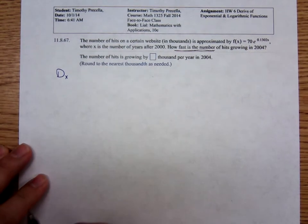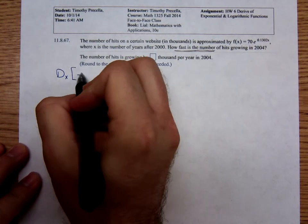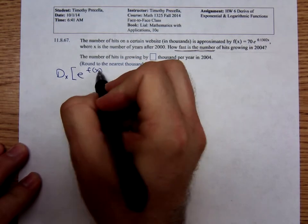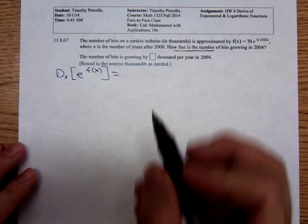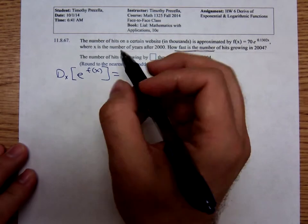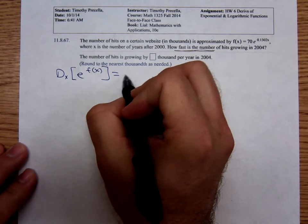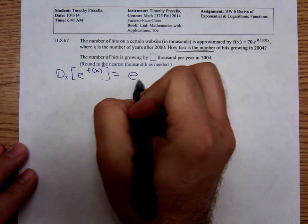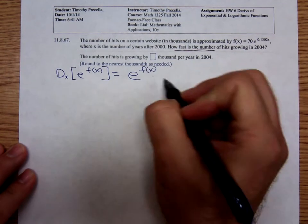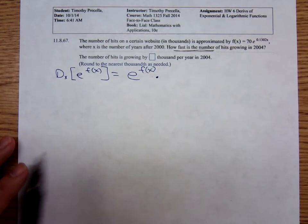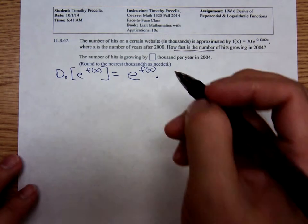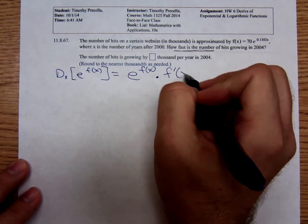Recall that the derivative with respect to x of e to the f(x), according to the chain rule, you differentiate the outer function. The derivative of the natural exponential is just e to the power, but then you have to multiply by the derivative of the inner quantity. The derivative of that exponent is f prime of x.